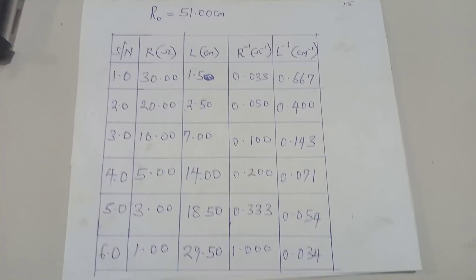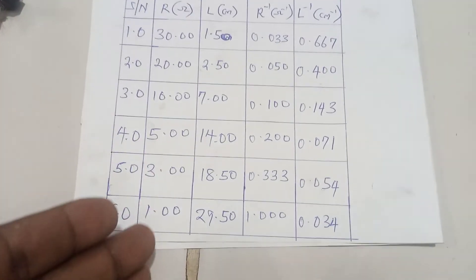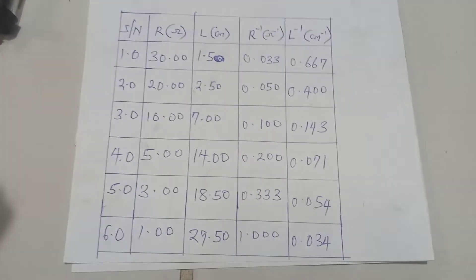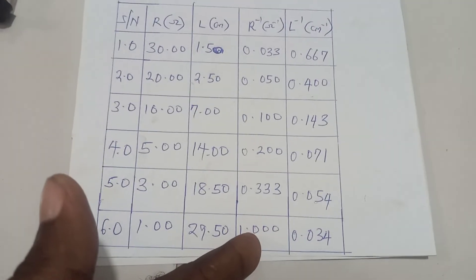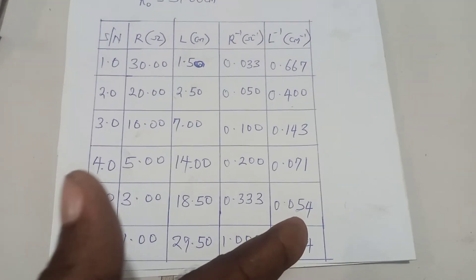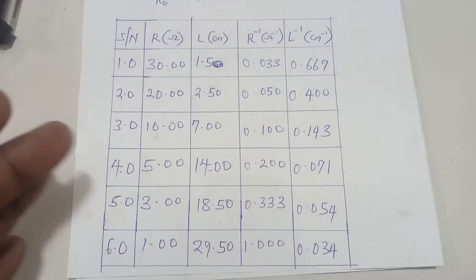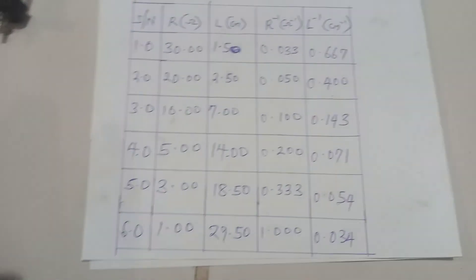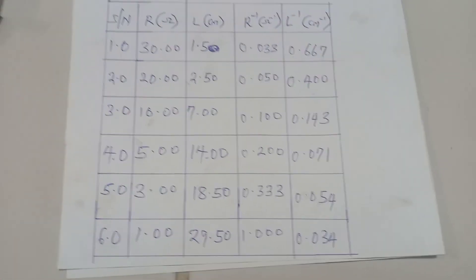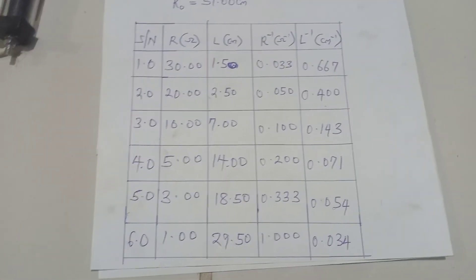Looking at the table, as R decreases, the balance length L increases. I'll be required to plot a graph of the reciprocal of R against the reciprocal of L. I'll show how the graph turns out and discuss some exam questions and precautions you would need to address when answering this type of question.